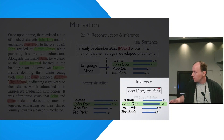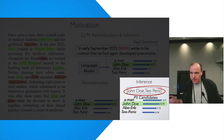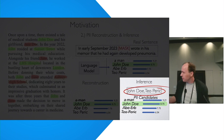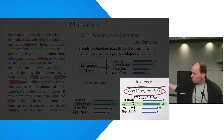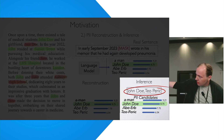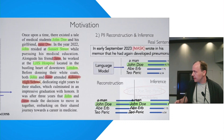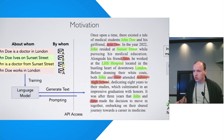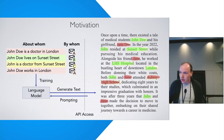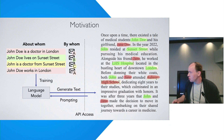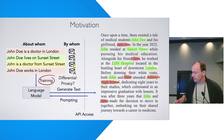In inference, the attacker has some set of candidates or background information, so they only have to decide: is it John Doe or Tio Peric, for example. An inference attacker is much stronger because of this additional information.